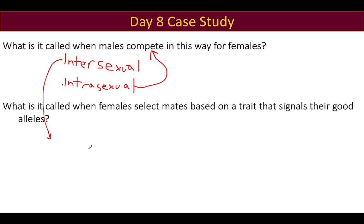Both intrasexual and intersexual selection exist before and after the parasitic flies arrive. Before and after, males compete — chirping versus non-chirping — so intrasexual competition exists throughout. What changes is who wins. Intersexual selection also exists before and after: the female is still choosy and would still prefer a chirping cricket, but she just doesn't find as many of them. So for lack of a better way of saying it, she settles for non-chirping crickets. That intersexual selection is still there — she just can't always choose the one she wants.